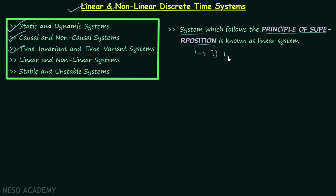The first law is known as the law of additivity and the second law is known as the law of homogeneity. If the system follows both the law of additivity and the law of homogeneity, we say the system follows the principle of superposition and hence is a linear system. If you don't know about these two laws, you can go back to the continuous time systems chapter and watch the lectures on linear and non-linear systems.